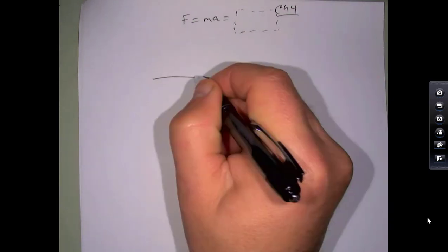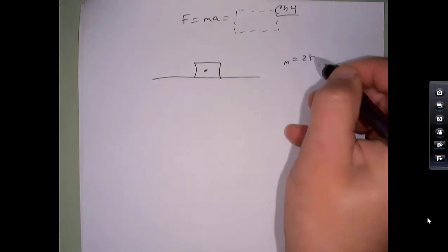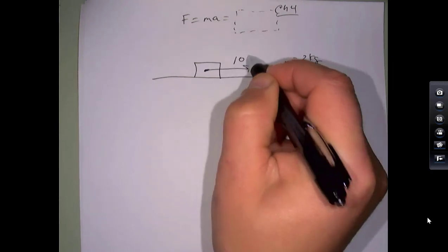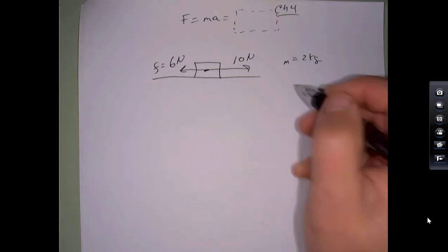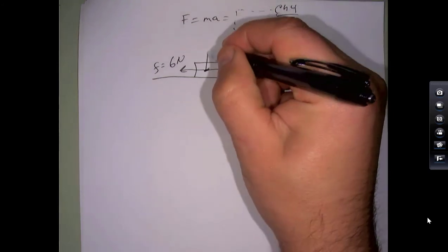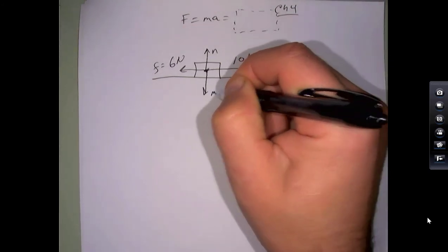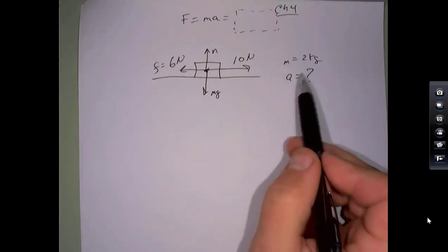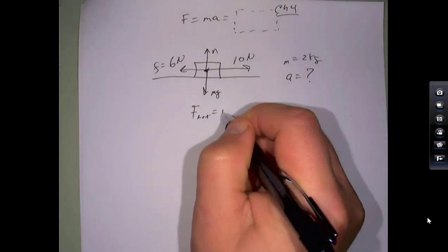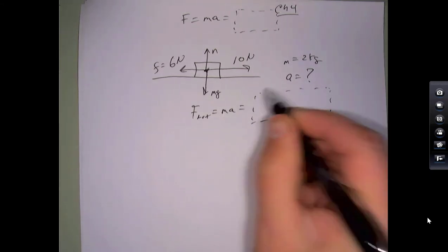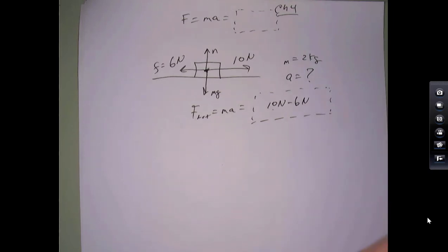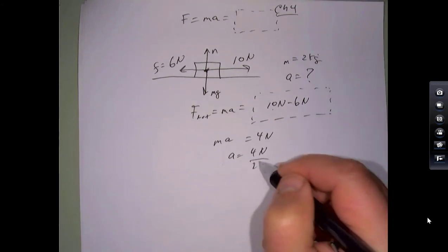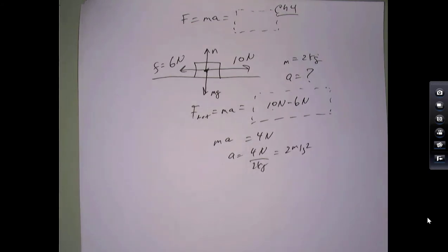For example, if I have a 2 kg crate being pushed with a force of 10 N to the right and a frictional force of 6 N to the left, the free body diagram also includes the normal force and mg (weight) straight down. To find the acceleration: net force = ma, so 10 N − 6 N = 4 N net force; a = 4 N / 2 kg = 2 m/s².